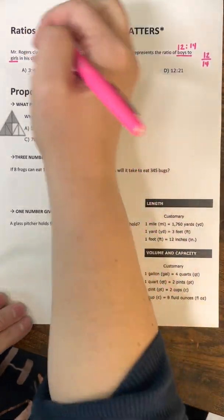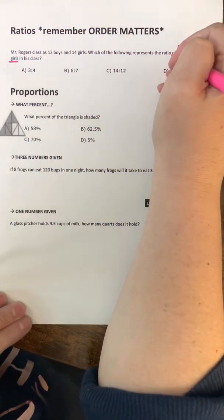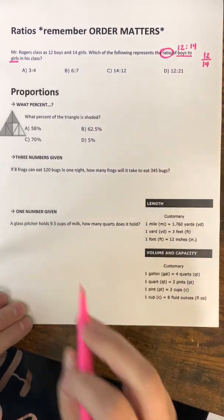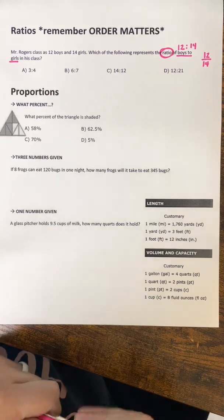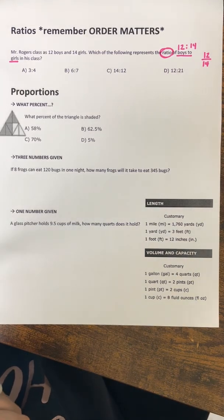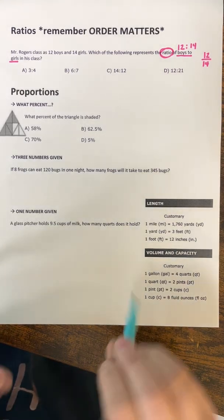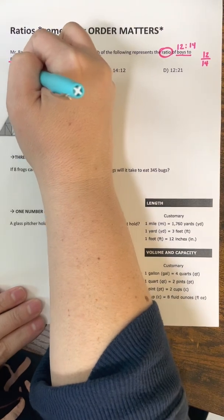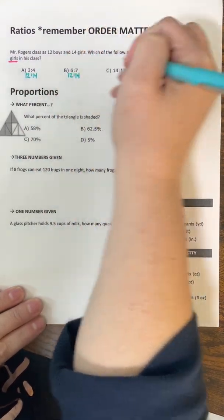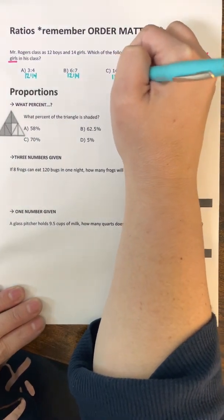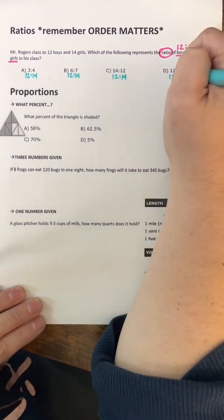Okay, so all we're going to do is our keyword being ratio. Once we have that keyword and our answers all look like this, all we have to do is stack them and butterfly. So I'm going to stack 12 to 14 underneath each one and butterfly to see which one gets me a right answer. And we know when we butterfly, we multiply corner to corner.